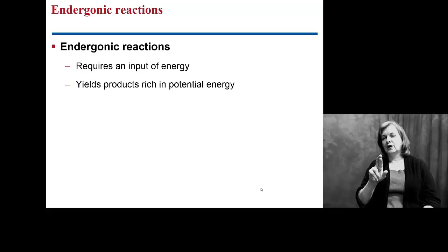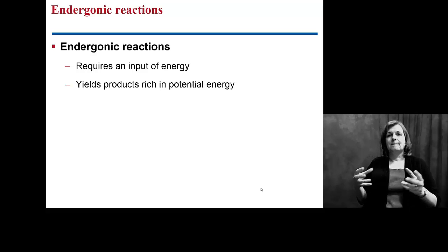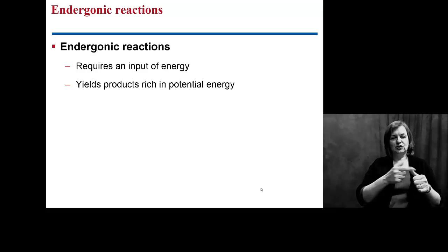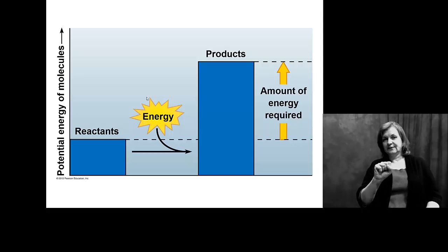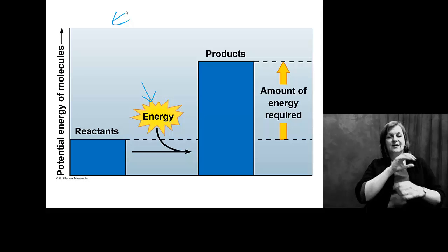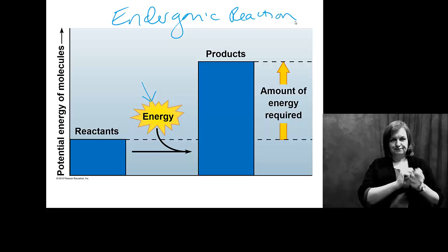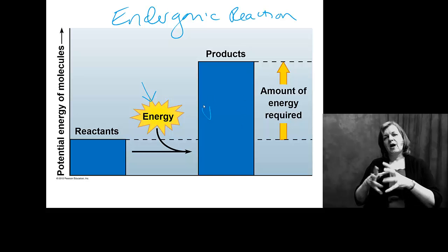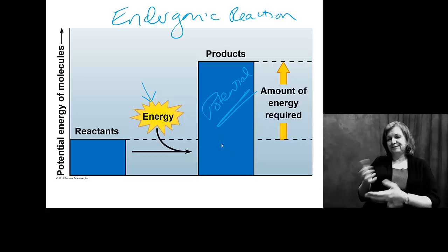So that endergonic reaction requires energy to be put in. And what we want to see is in the end we end up with more energy stored than what was available in the original reactants. So our reactants here we put energy in. If we're putting energy in it is endergonic. And the energy you see is going to help us store huge amounts of potential energy in a product. And in this case our product is ATP.